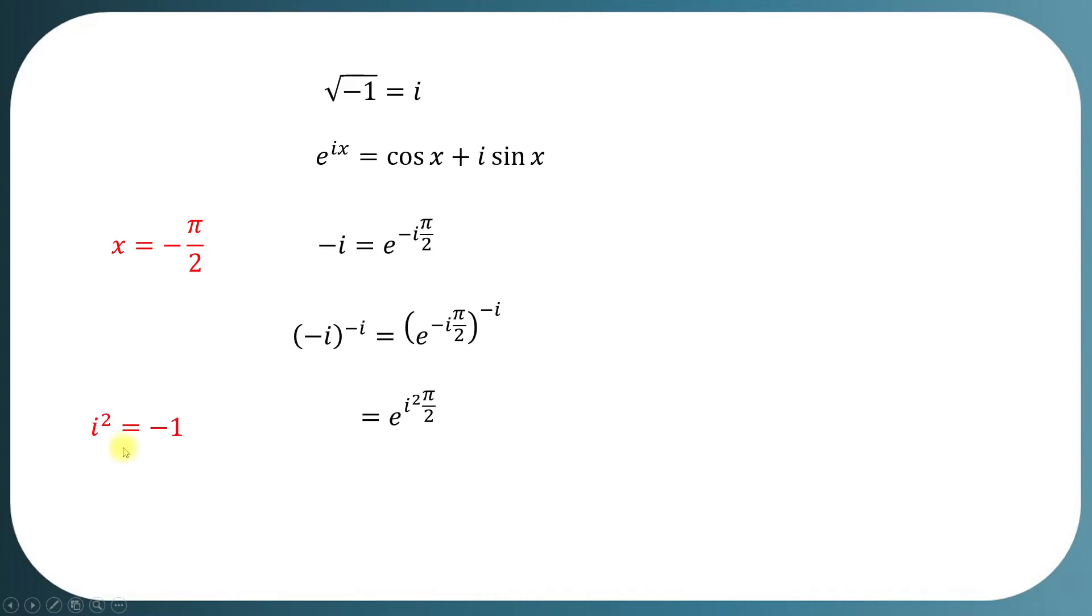Since iota squared equals negative 1, hence we replace iota squared by negative 1 and we get E to the negative pi by 2.